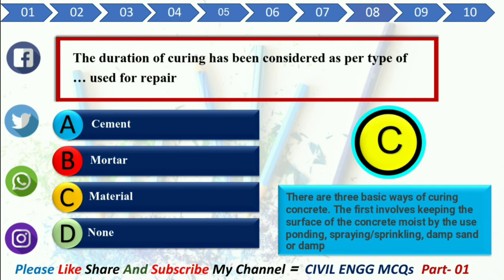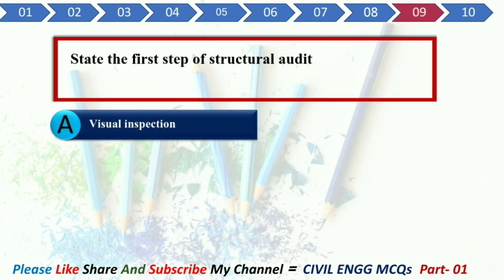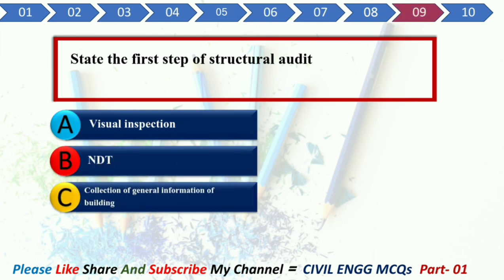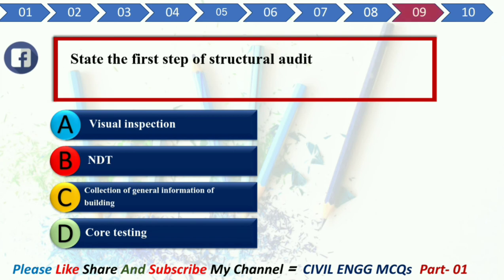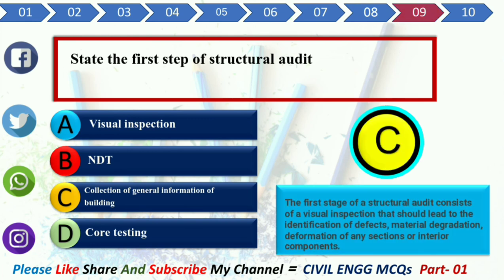Q9. State the first step of structural audit. Option A: Visual inspection. Option B: NDT test. Option C: Collection of general information of building. Option D: Core testing. Your correct answer is Option C: Collection of general information of building. Explanation: The first stage of structural audit consists of visual inspection that should lead to the identification of details and material degradation, deformation of any section or interior component.